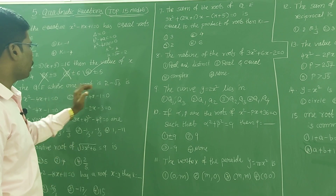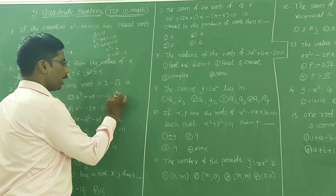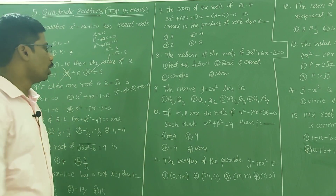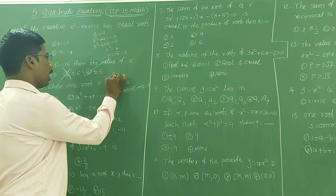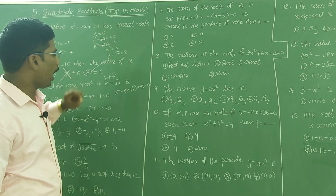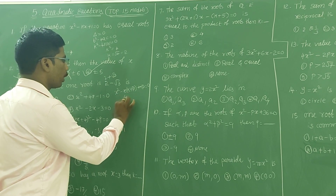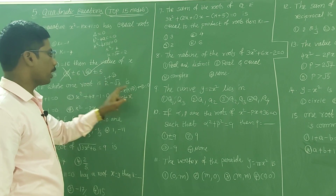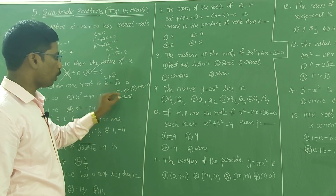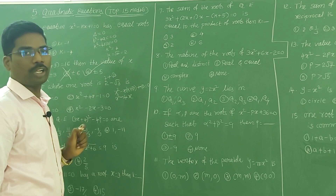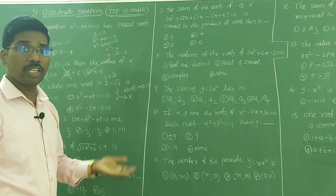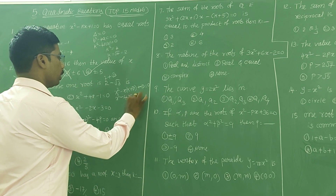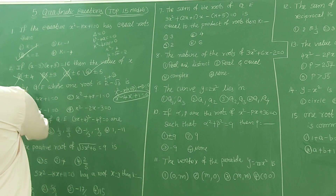The quadratic equation whose one root is 2-√3 — find the equation. Using the formula x² - (α+β)x + αβ = 0, the other root will be 2+√3 (opposite sign on the irrational part). Sum: (2-√3)+(2+√3) = 4, so we get -4x. Product: (2+√3)(2-√3) = 2²-(√3)² = 4-3 = 1. So the equation is x² - 4x + 1 = 0, which is the first option.